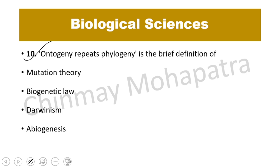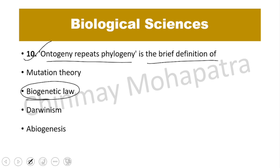Question number 10. 'Ontogeny repeats phylogeny', or 'ontogeny recapitulates phylogeny', is the brief definition of the biogenetic law. Remember friends, this is very important.